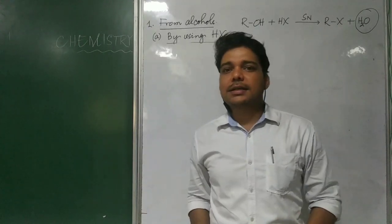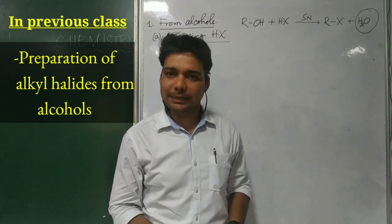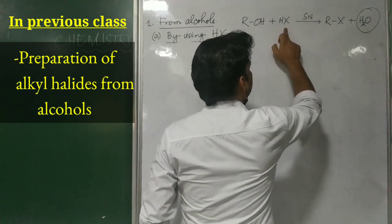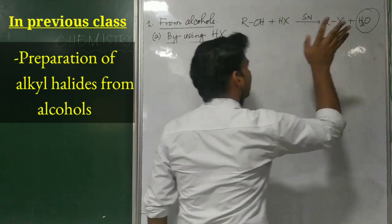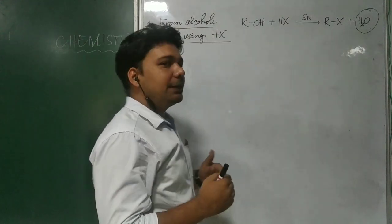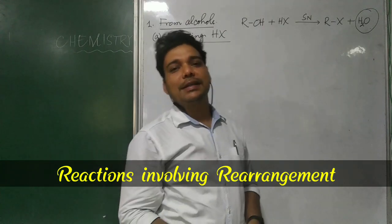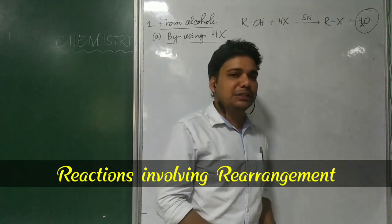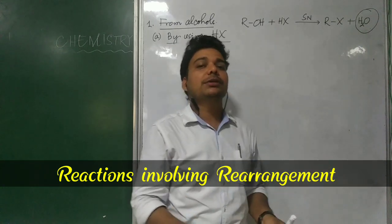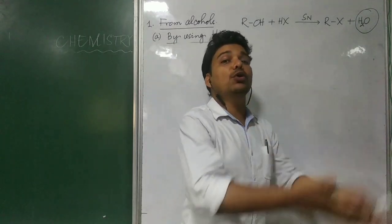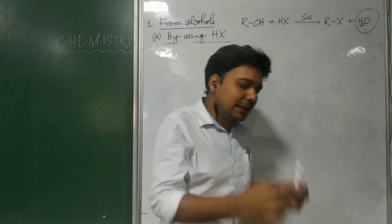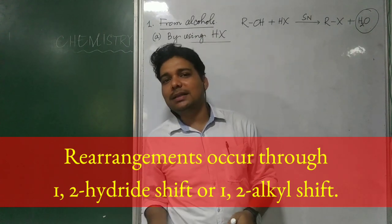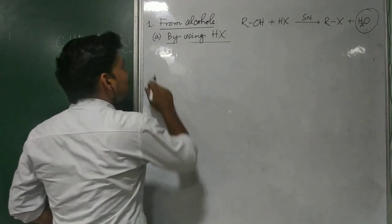Hello students. In our last class we were dealing with the method of preparation of alkyl halides. The chemical equation involved alcohol reacting with halogen acid — they undergo nucleophilic substitution reaction and alkyl halide is our desired product. Today we will discuss some chemical reactions which involve rearrangement. The SN1 reaction of alcohols with halogen acids often involves rearrangement whenever the initially formed carbocation can be changed into a relatively more stable carbocation intermediate. Generally these rearrangements occur through 1,2-hydride shift or 1,2-alkyl shift.